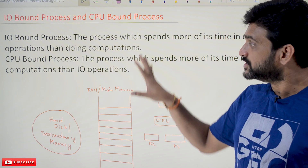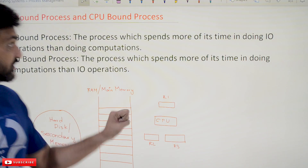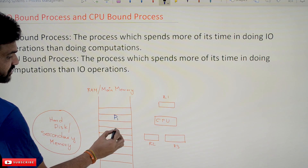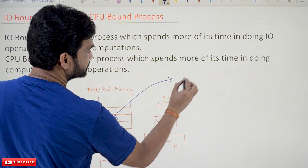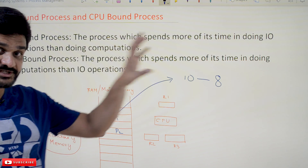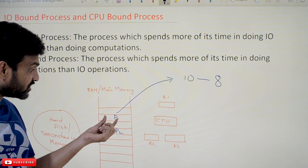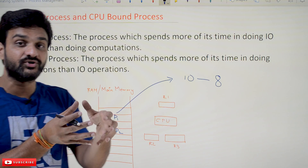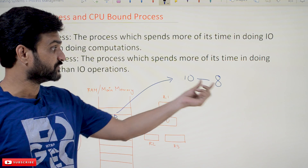The definition looks very simple, so we'll try to understand it using a standard example we've been following in the last few videos. Let's take two processes. Assume that process P1 has 10 instructions. Out of these 10 instructions, if 8 are doing IO operations, then this process P1 is what we call an IO-bound process — a process which spends most of its time doing IO operations.